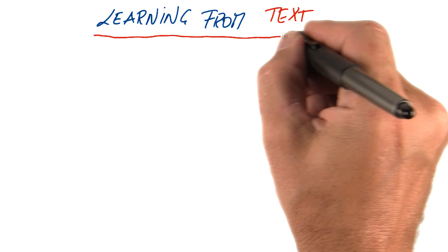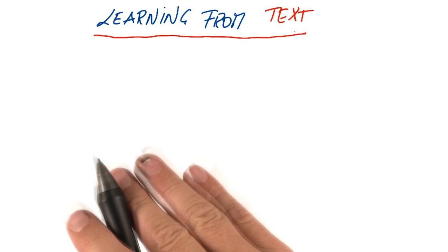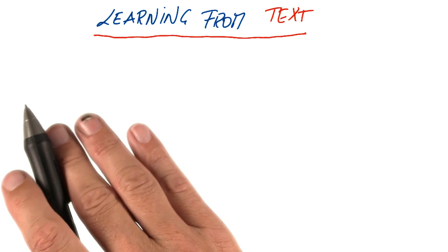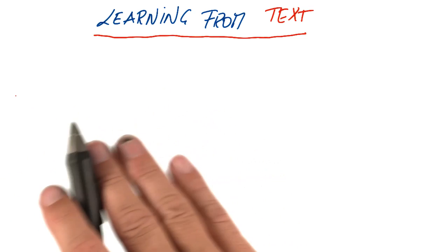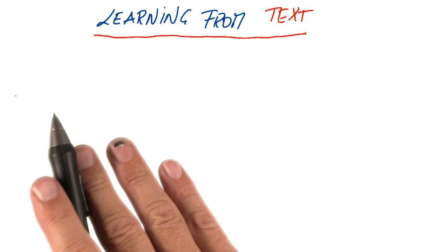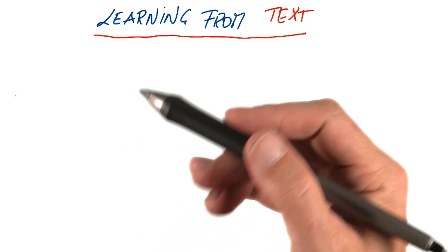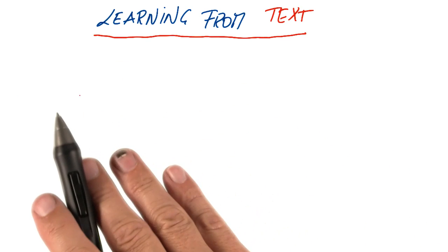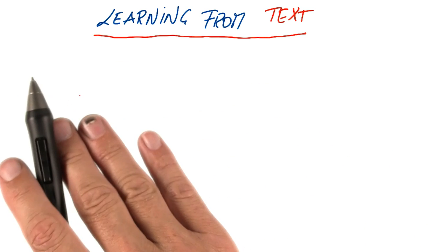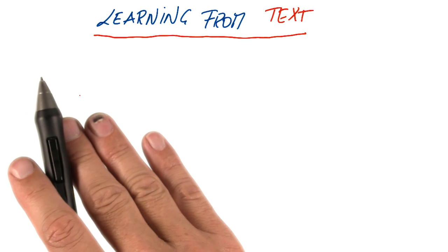So in learning from text, one of the fundamental problems we have is that the length of each document that you're learning from, each email or each book title, is non-standardized. So you can't just use each individual word as an input feature, because then long emails would require different input space than short emails.